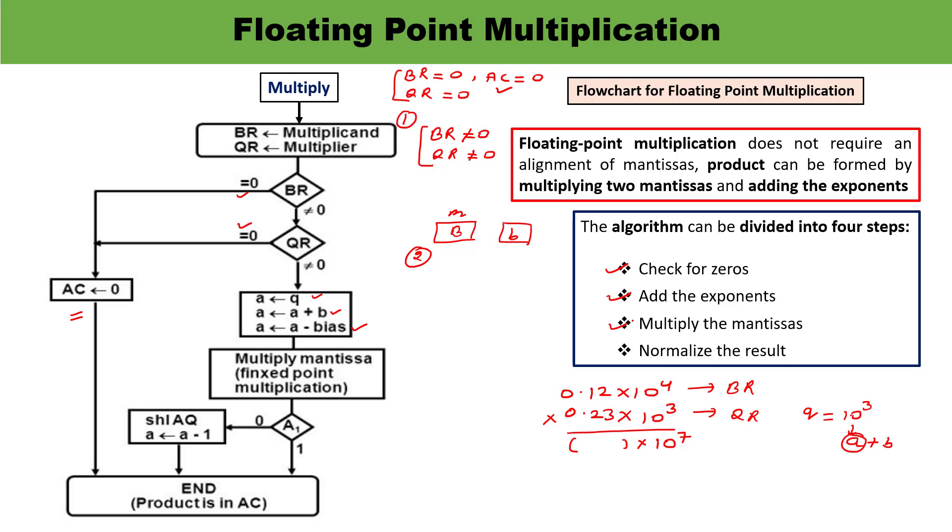The third step is to multiply the mantissas. After multiplication, you check the result. For example, if the result is 0.011 times 10 raised to the power 3, the MSB is 0, but it must be non-zero. If bit A1 is 0, perform shift left operation. This gives 0.110 times 10 raised to the power 2, which is the final answer. If bit A1 is 1, that's the end.